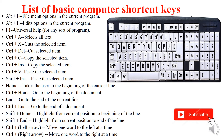Ctrl+Left Arrow moves one word to the left at a time. Ctrl+Right Arrow moves one word to the right at a time. These are the important basic computer shortcut keys.